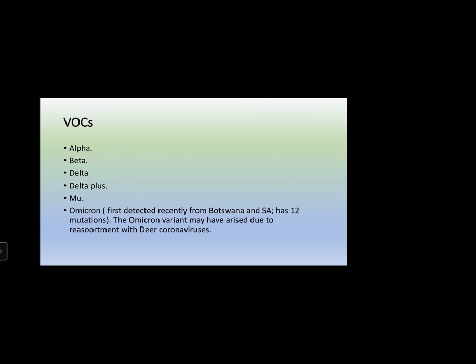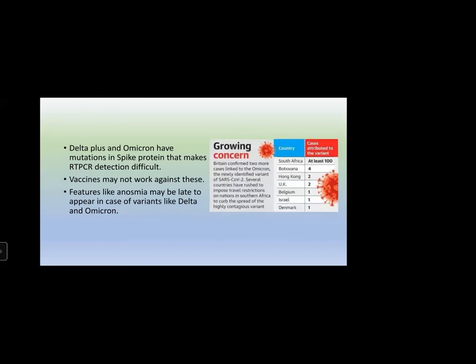Omicron was first detected from Botswana and Republic of South Africa. It has 12 mutations and may have up to 30 mutations only in the spike protein. Omicron variant might have arisen due to reassortment with other coronaviruses like deer coronaviruses — recombination between human SARS coronavirus and animal coronaviruses may lead to more variations and mutations, making the virus difficult to detect or elicit immune response.